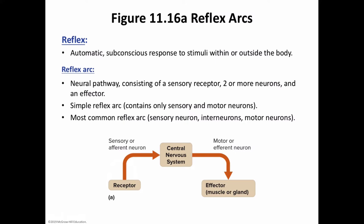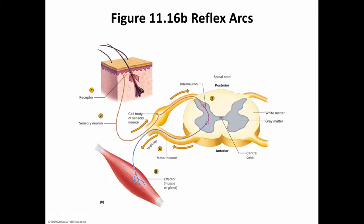Reflexes occur throughout the central nervous system. Those that involve the spinal cord are known as spinal reflexes, reflecting the simplest level of CNS function. See figure 11.16B. A reflex arc usually includes: one, a receptor; two, a sensory neuron; three, integration within the central nervous system involving at least one synapse; four, a motor neuron; and five, an effector.